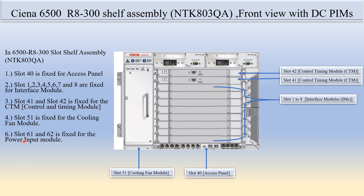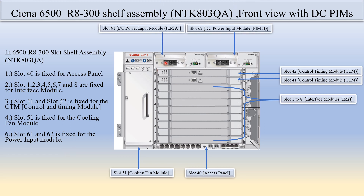Slot 61 and 62 are fixed for the power input module. You can see here slot 61 and slot 62 — this is the DC power input module. There are two types of power module: DC and AC input module. This self-assembly is the front view with the DC power module. Slot 61 is the DC power input module PIM A, and slot 62 is the DC power input module PIM B.